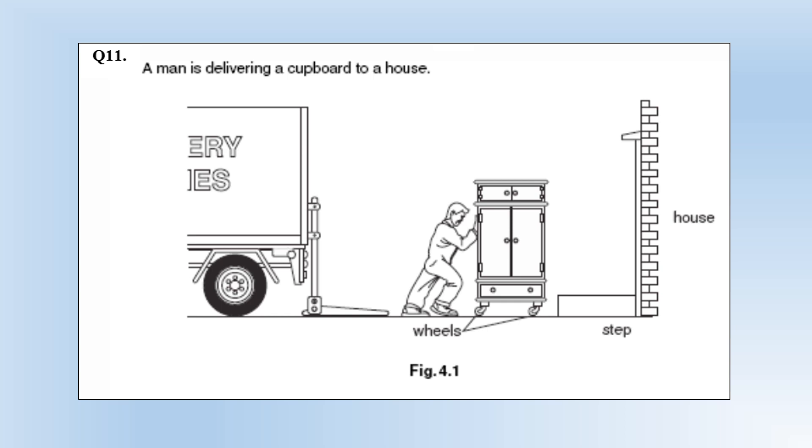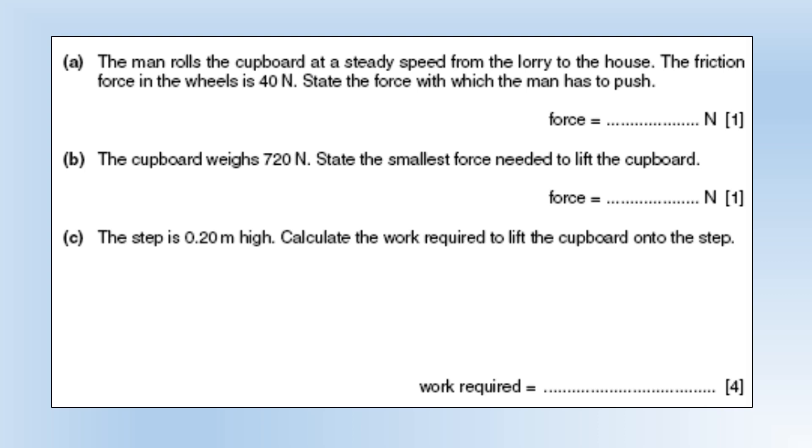A man is delivering a cupboard to a house. Man rolls the cupboard at a steady speed from the lorry to the house. The friction force in the wheels is 40 newtons. State the force with which the man has to push. Well, 40 newtons. It's traveling at a steady speed so the resultant force must be zero, so they must both be 40 newtons so they cancel out. The cupboard weighs 720 newtons. State the smallest force needed to lift the cupboard. 720 newtons because then you'd be lifting it at constant speed. The step is 0.2 meters high. Calculate the work done to lift the cupboard. Change of GPE is mass times gravitational field strength times change in height. Mass times gravitational field strength is just the weight, which we've already been given. 720 times 0.2 gives us 144 joules.